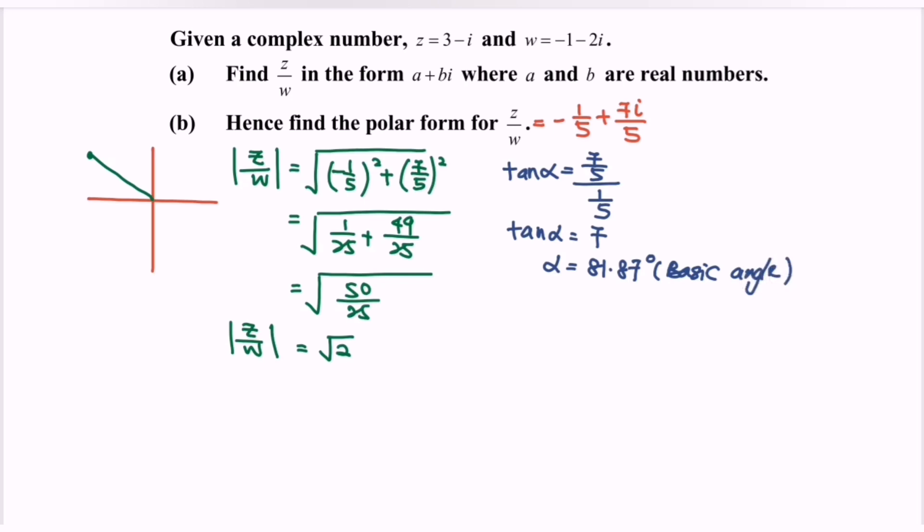Here we have the basic angle α. To determine the argument of z, we must start from 0°. The argument of z equals 180° minus the basic angle. Converting to radians, we multiply by π/180°. Finally, we obtain 0.545π radians for the argument of z.